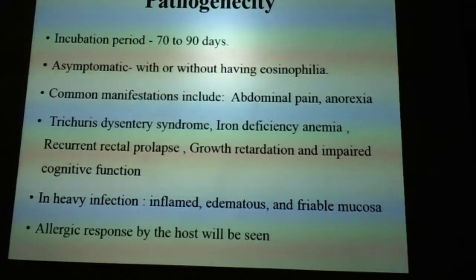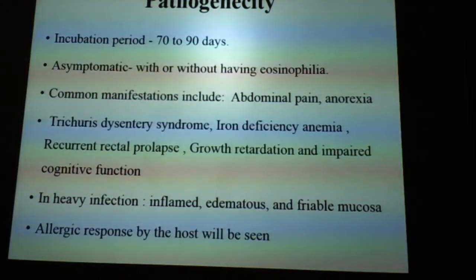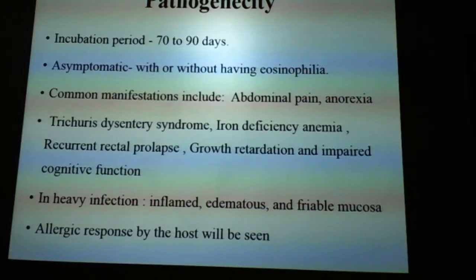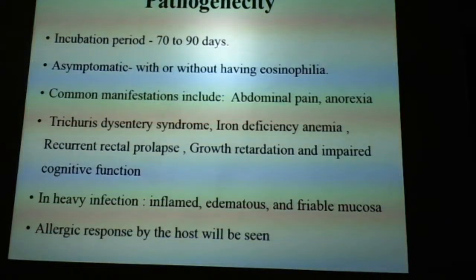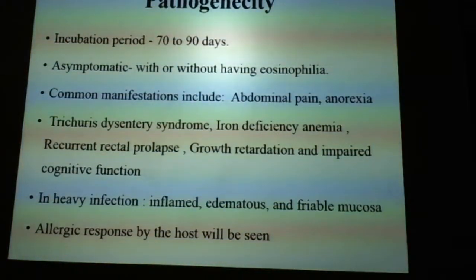Trichuris trichura has a long incubation period, varying from 70 to 90 days. Usually, patients infected with trichuriasis are asymptomatic. If they have symptoms, it will be like eosinophilia. Other common manifestations include abdominal pain and anorexia. They may also present with a syndrome known as Trichuris dysentery syndrome. They are most commonly affected by iron deficiency anemia, as parasites take the nutrition of the individual. Recurrent rectal prolapse is also noted.